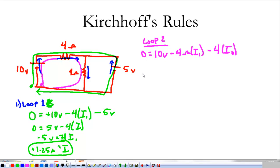So, we have 0 equals 10 volts minus 4 times 1.25 minus 4 times I2. So, we're going to have 0 equals 10 volts minus 5 volts minus 4 I2. And I think we can see where this is going. So, negative 5 volts is equal to 4 I2. And I get that I2 is equal to 1.25 amps.